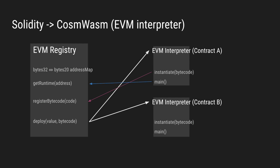This EVM registry contract stores all the runtime bytecodes for the EVM contracts and also stores a mapping between the 32-byte addresses from CosmWasm to the 20-byte equivalent EVM short addresses. So the registry knows how to deploy an EVM contract by using the code ID of the interpreter. In the background, it instantiates the new contract with the given deployment bytecode, so the instantiate function of the contract executes this deployment bytecode and obtains the runtime bytecode, which is then registered into the EVM registry contract.